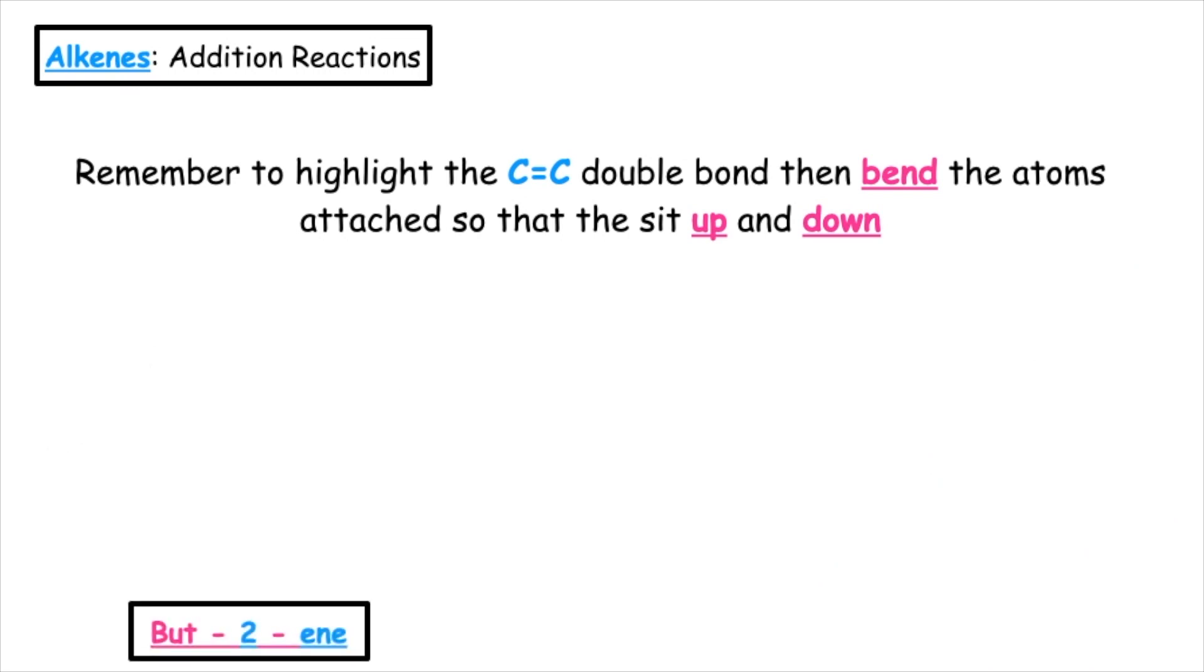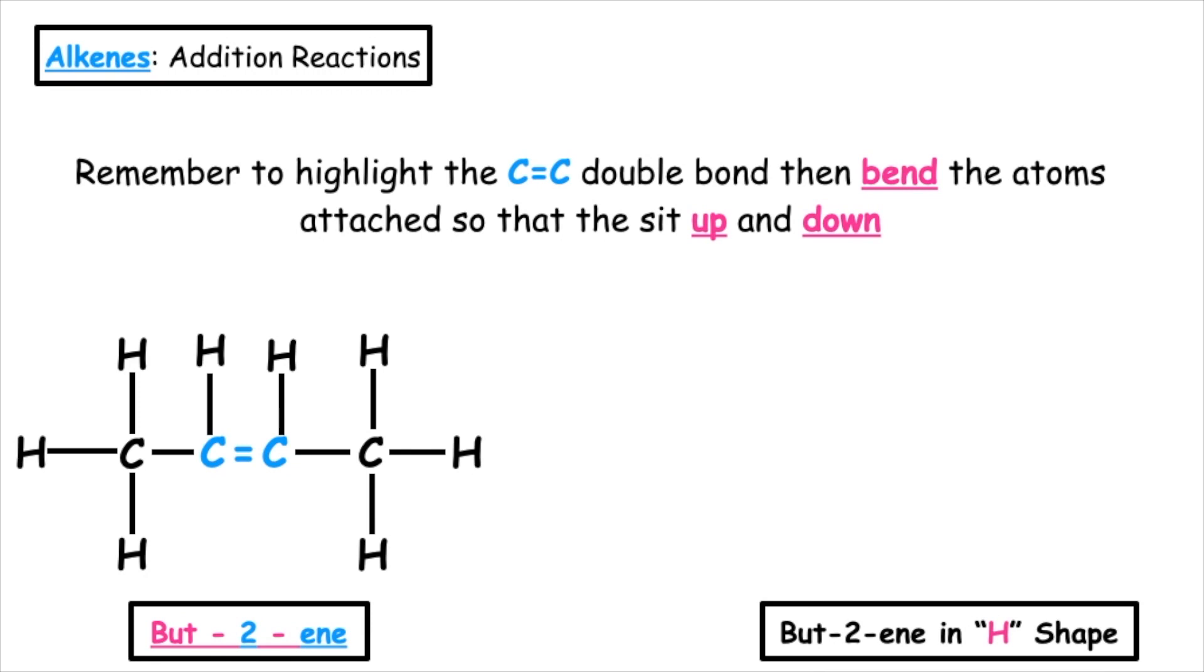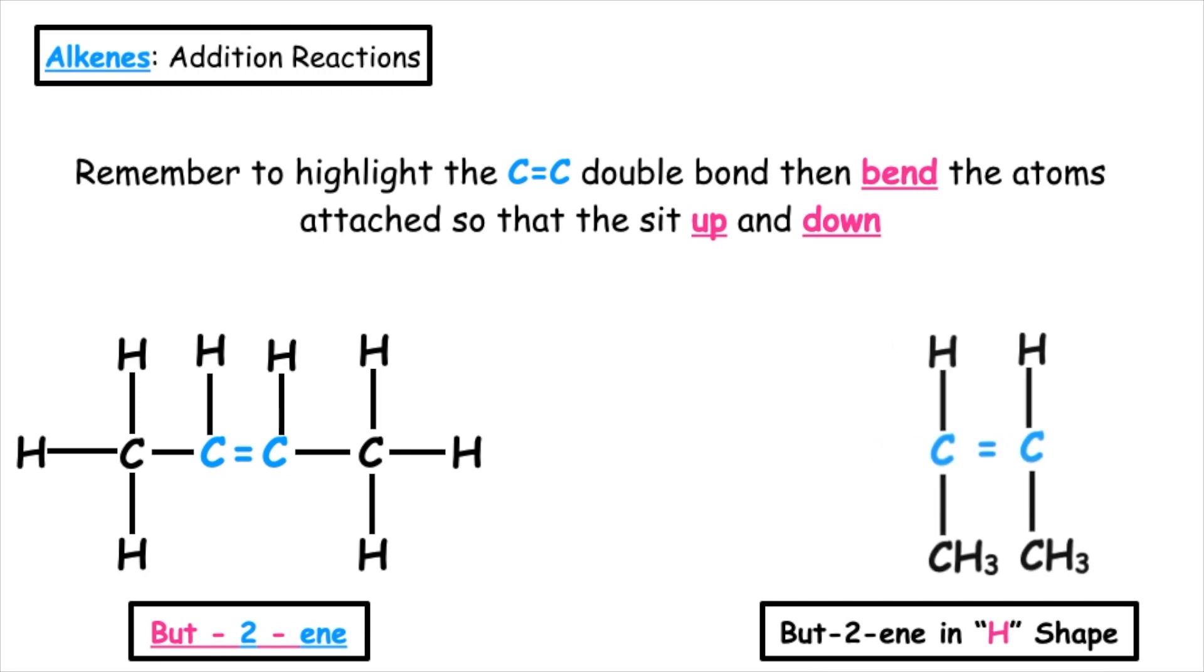But-2-ene is an isomer of but-1-ene. The carbon-to-carbon double bond can be found in the middle of the structure. We highlight this and we bend the CH3 of the first carbon down and the CH3 of the second carbon to form but-2-ene in the H shape.